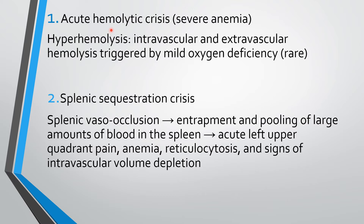The first crisis is acute hemolytic crisis. It occurs rarely and is due to hyperhemolysis — that is, destruction of RBCs both within the blood vessel (intravascular) and outside the blood vessel (extravascular), triggered by mild oxygen deficiency. Acute hemolytic crisis is due to widespread hemolysis of abnormal RBCs within and outside the blood vessel, triggered by mild oxygen deficiency.